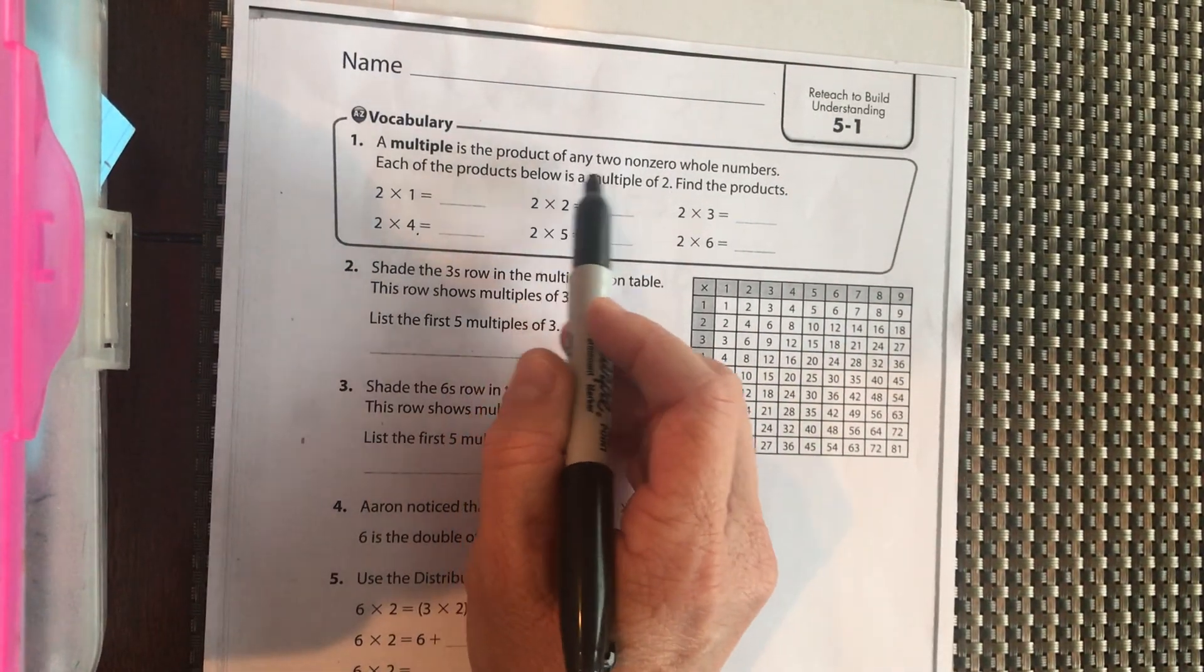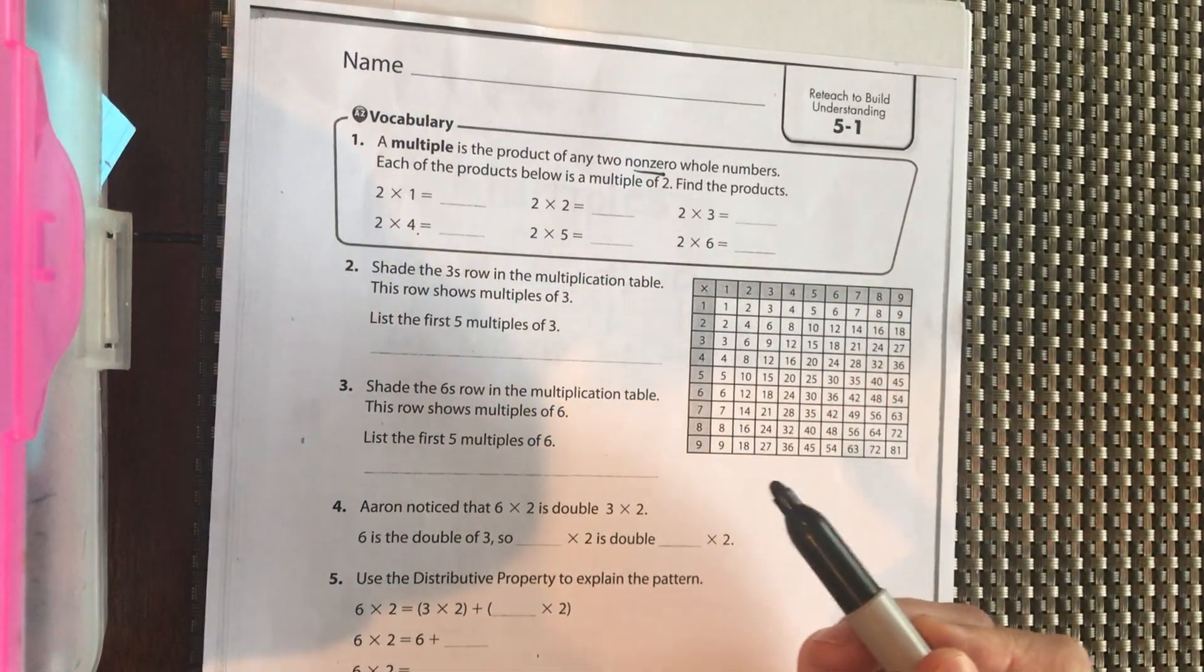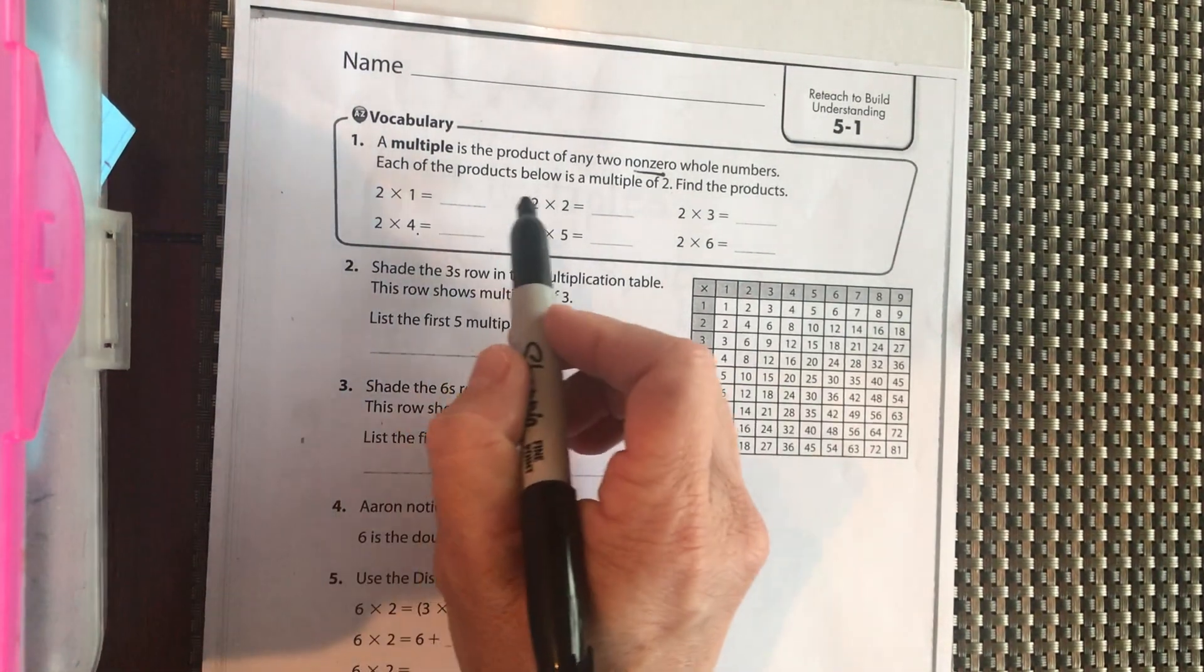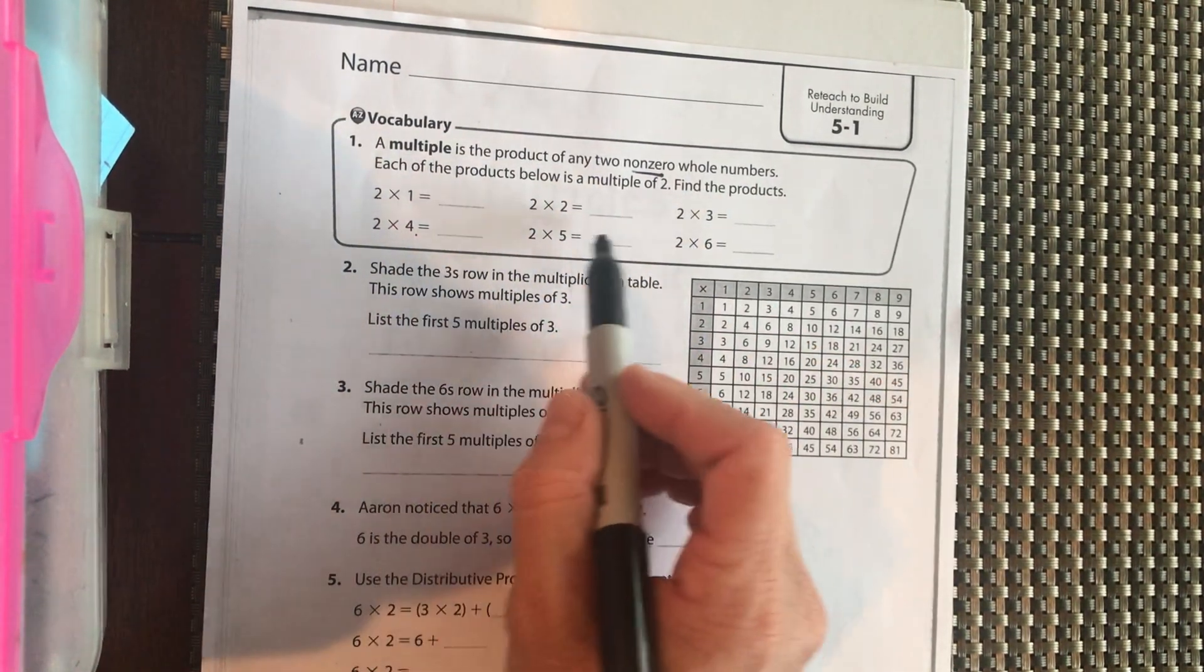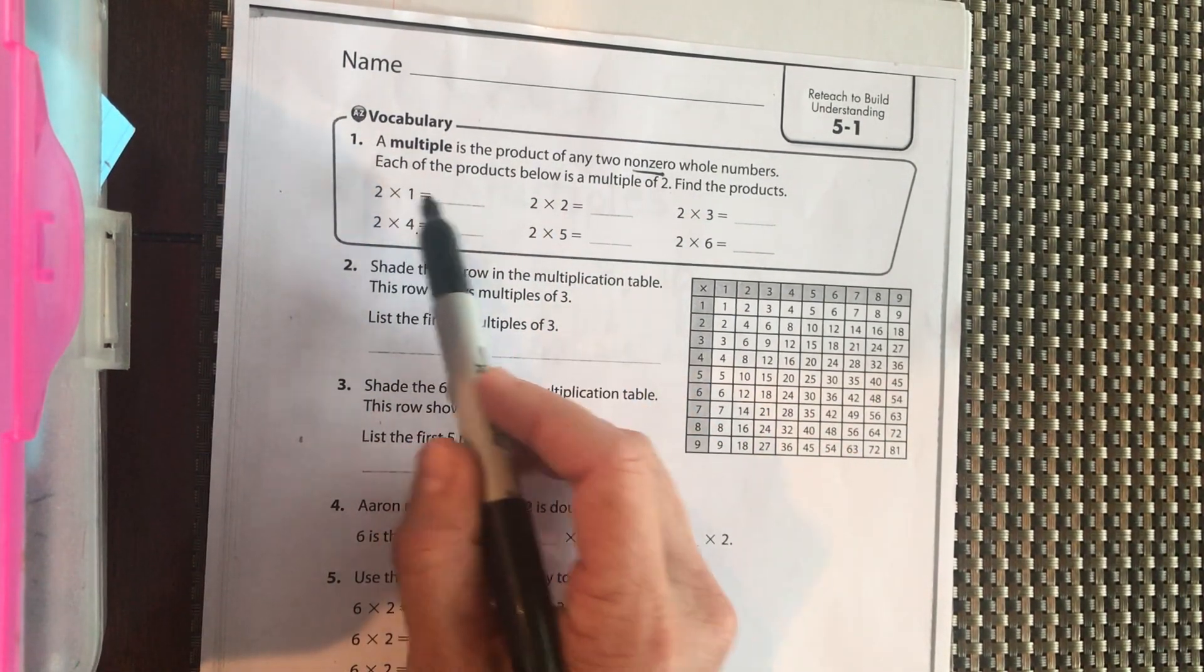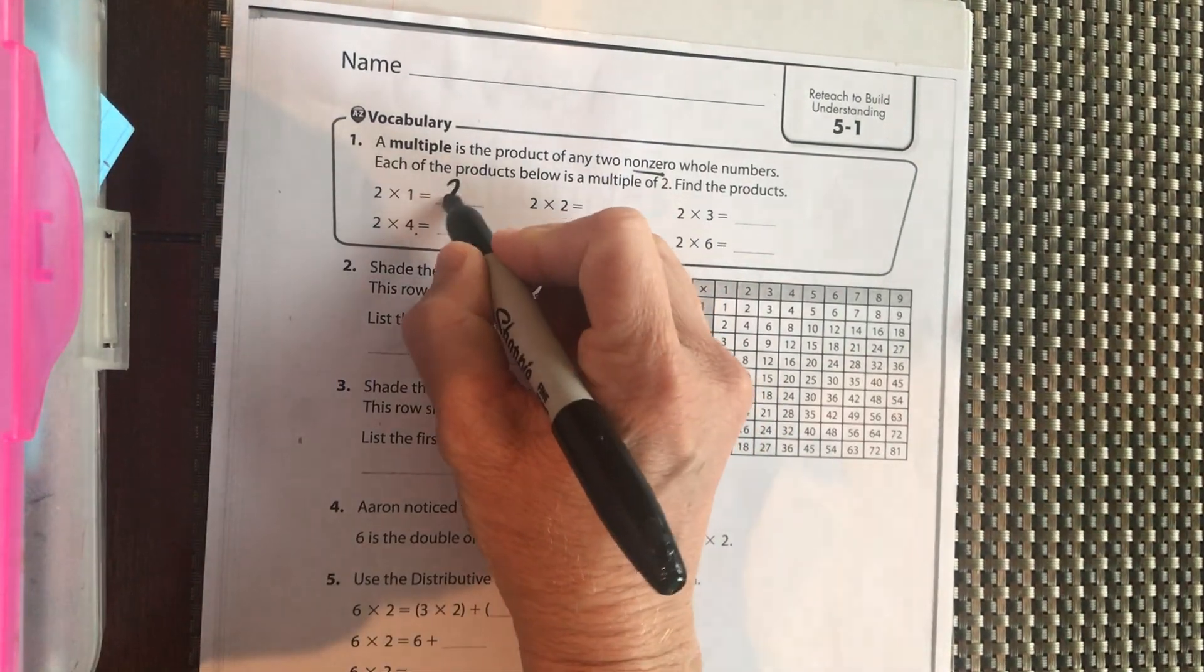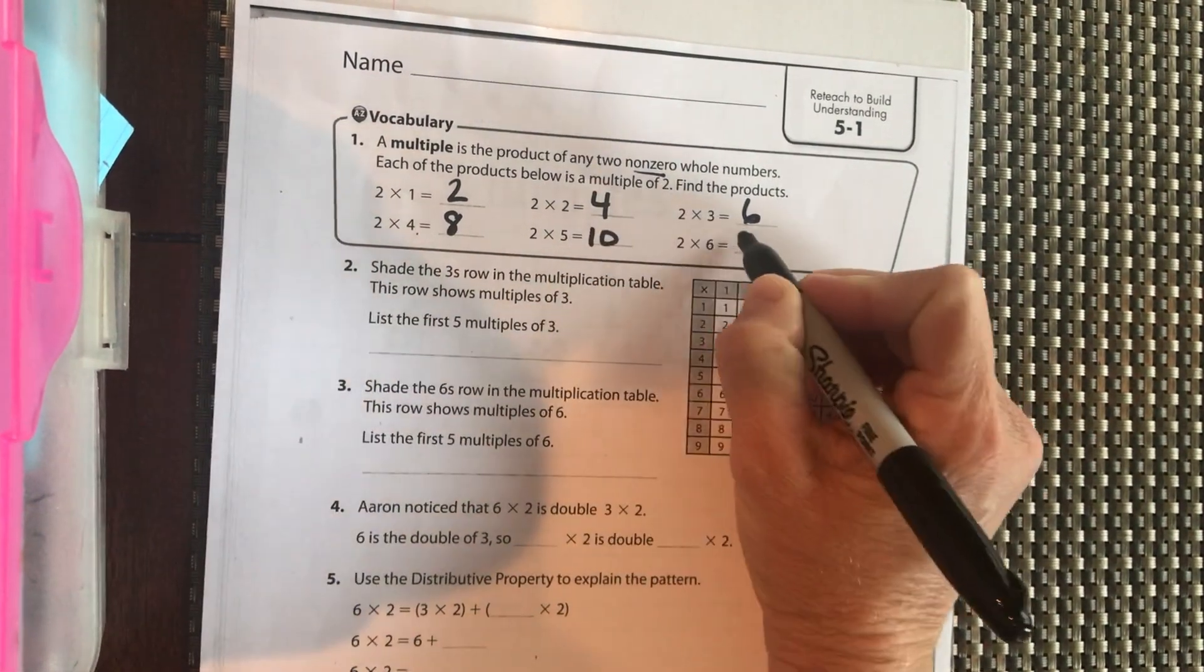A multiple is the product of any two non-zero whole numbers. Of course, if we multiply a number by zero, that's the most powerful number in multiplication that will turn the product into zero. So we have to be dealing with non-zero whole numbers. Each of the product below is a multiple of two. So go ahead, you can skip count by twos as you do this. Go ahead, pause the video and fill in, skip 2 times 1, 2 times 2, 2 times 3. Okay, so we should have 2, 4, 6, 8, 10, and 12.